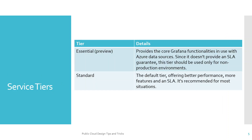There are two service tiers available for Grafana: Essential and Standard. Essential is more of a trial tier — it is not recommended for production environments, has very limited capability, and does not come with any SLA guarantee. Standard is the production-ready tier, is the default within Azure, and offers better performance and more features.